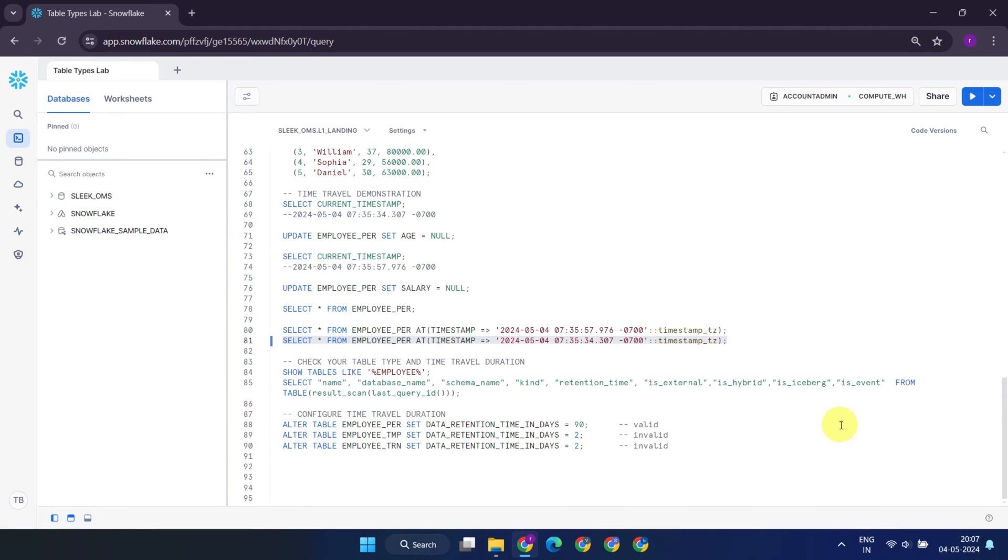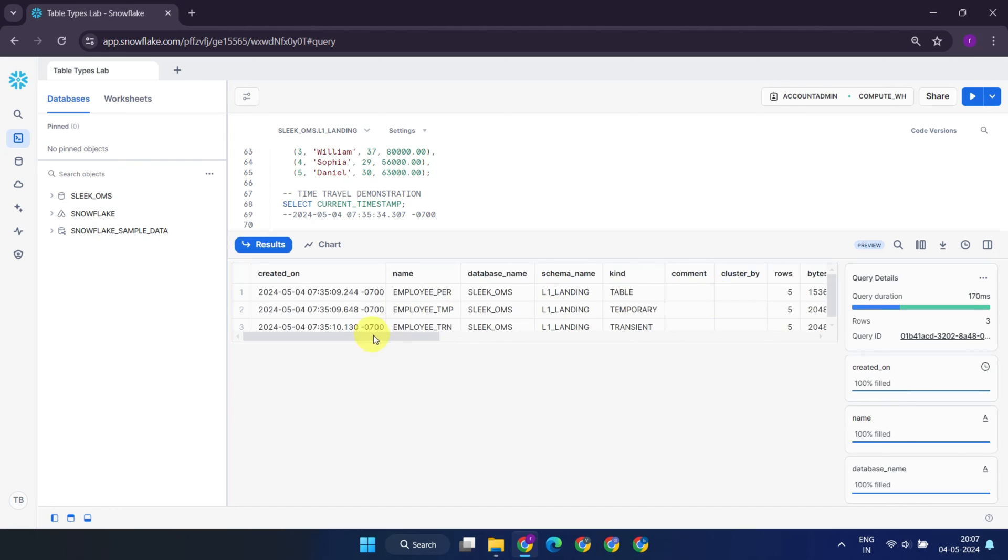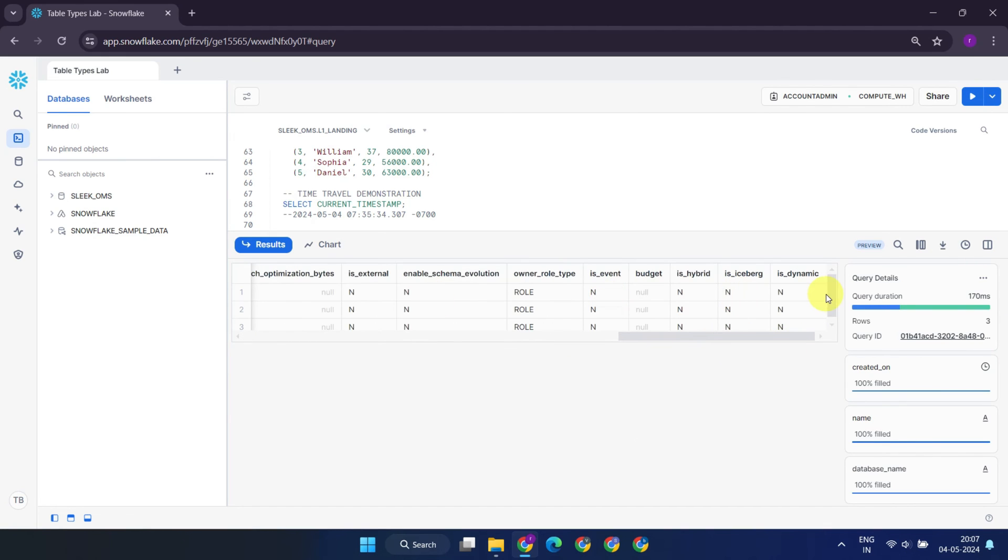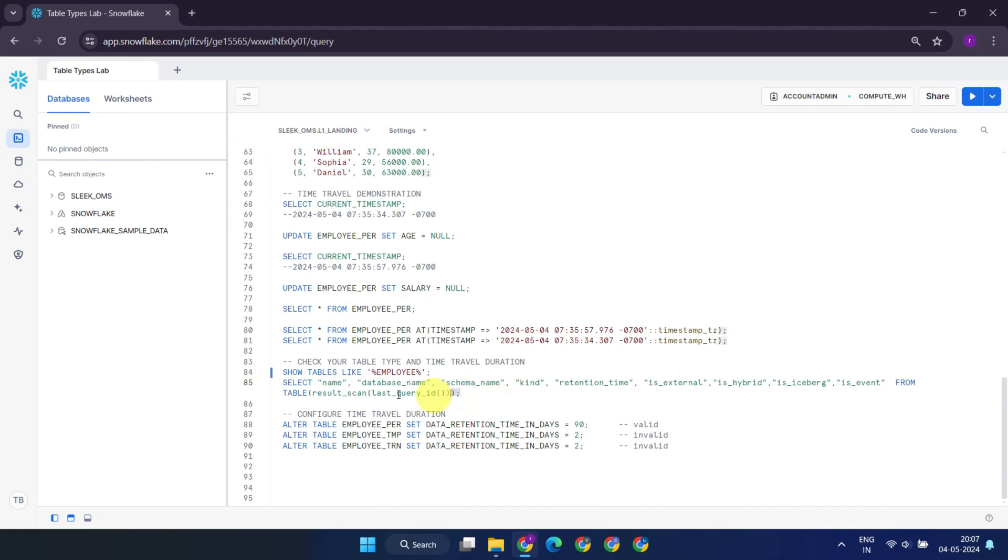Now that we've a fair understanding of time travel, let's proceed with running the show command to display the details of these tables. Since this command returns detailed information, I've tailored the query to fetch only the necessary columns based on the results obtained from the last query.